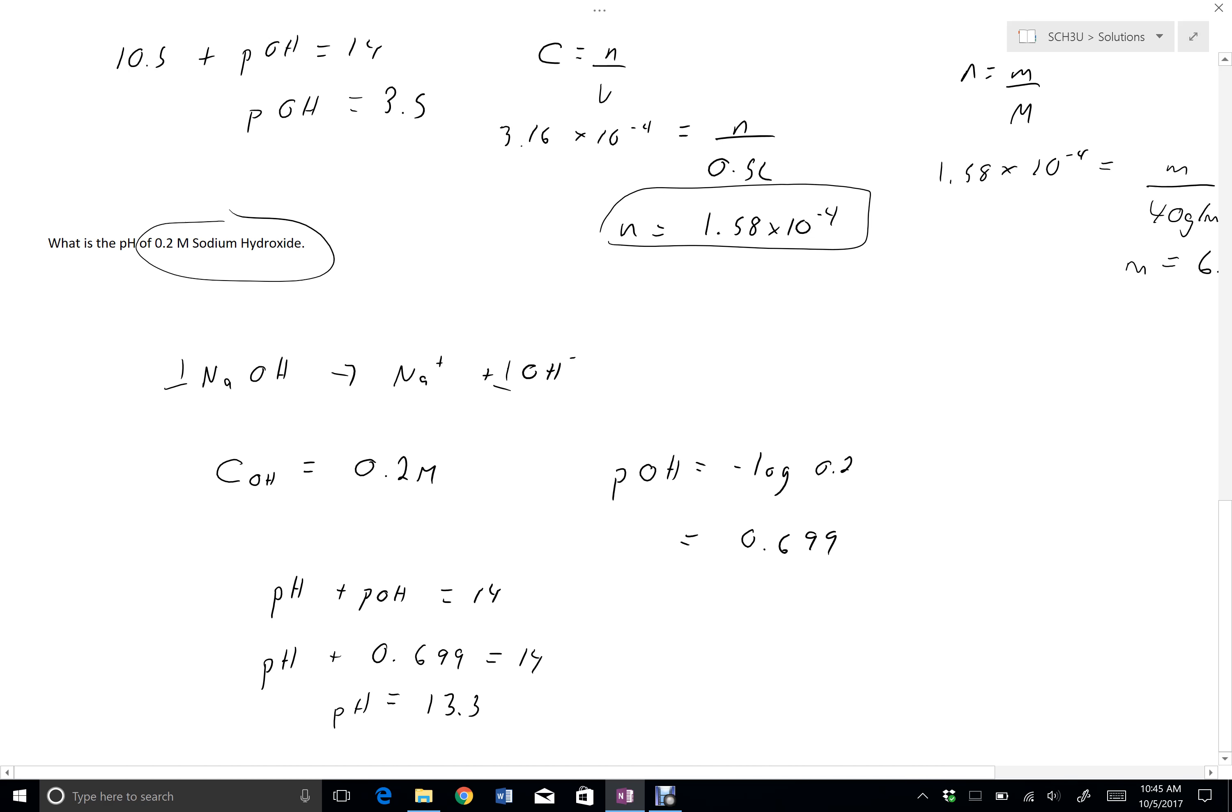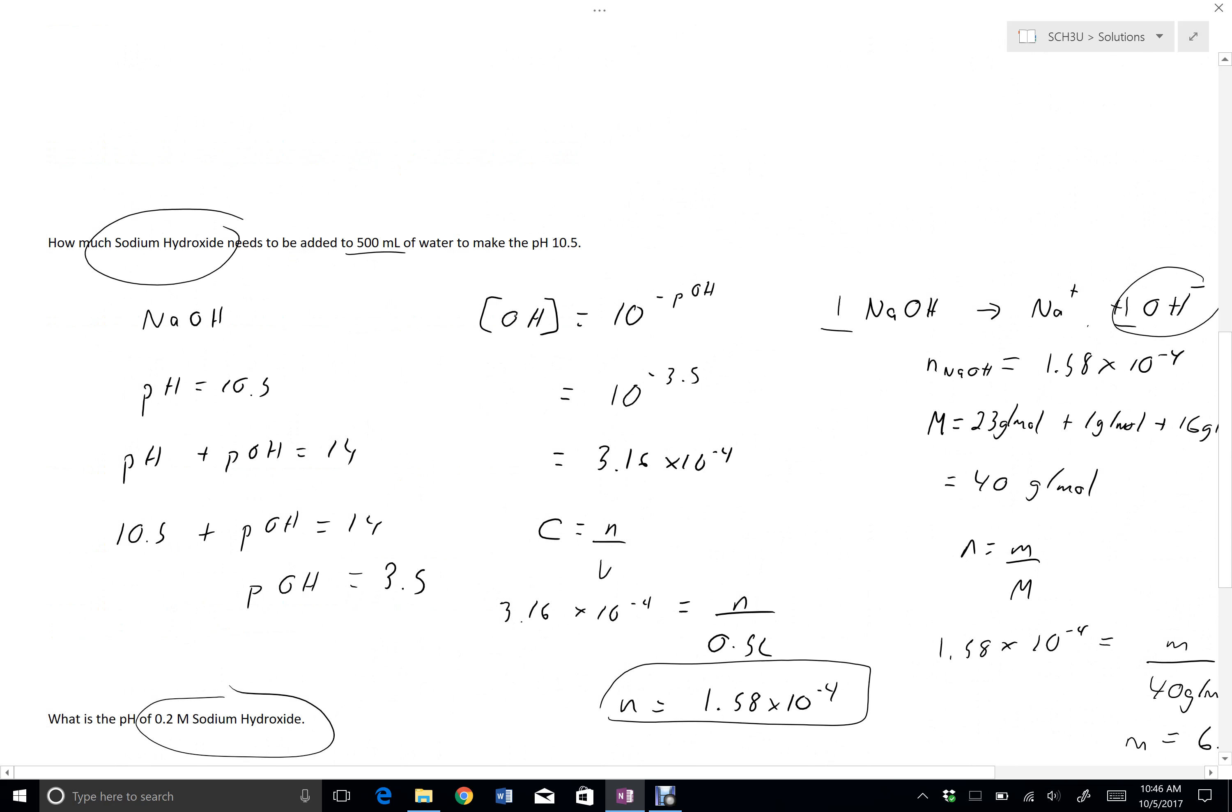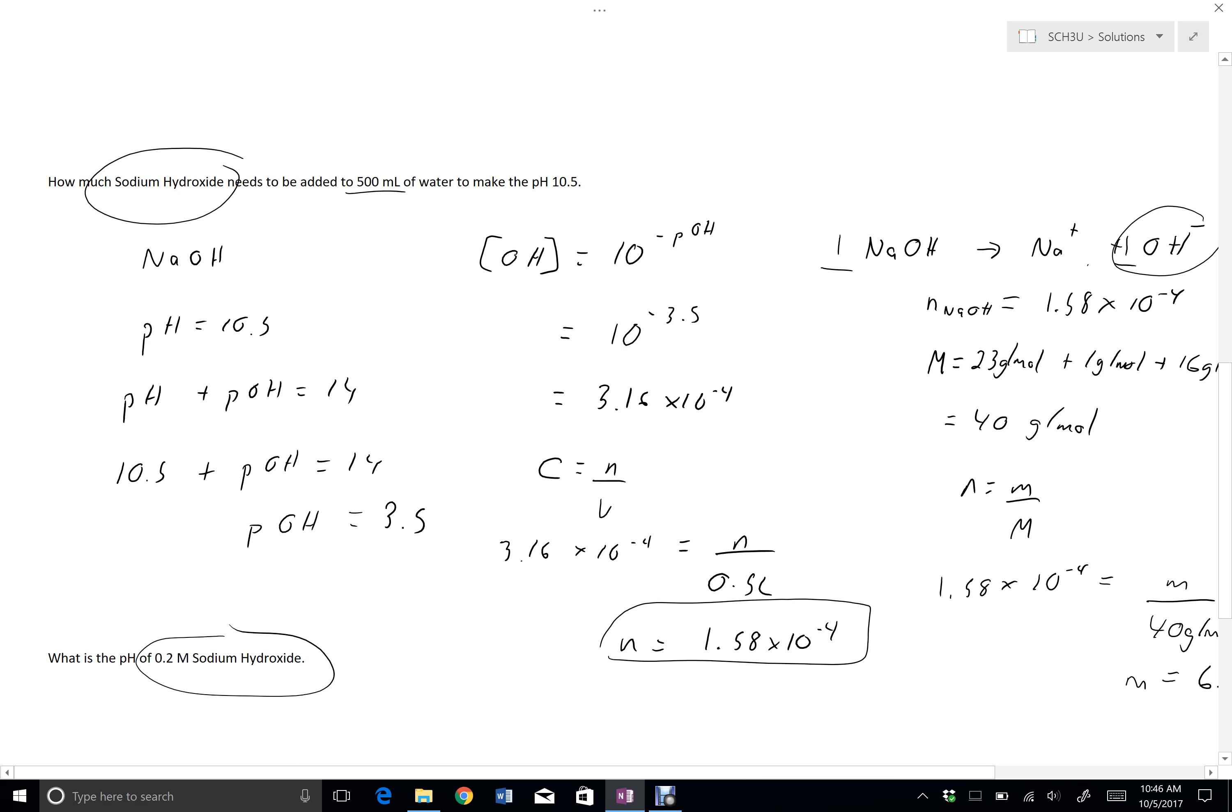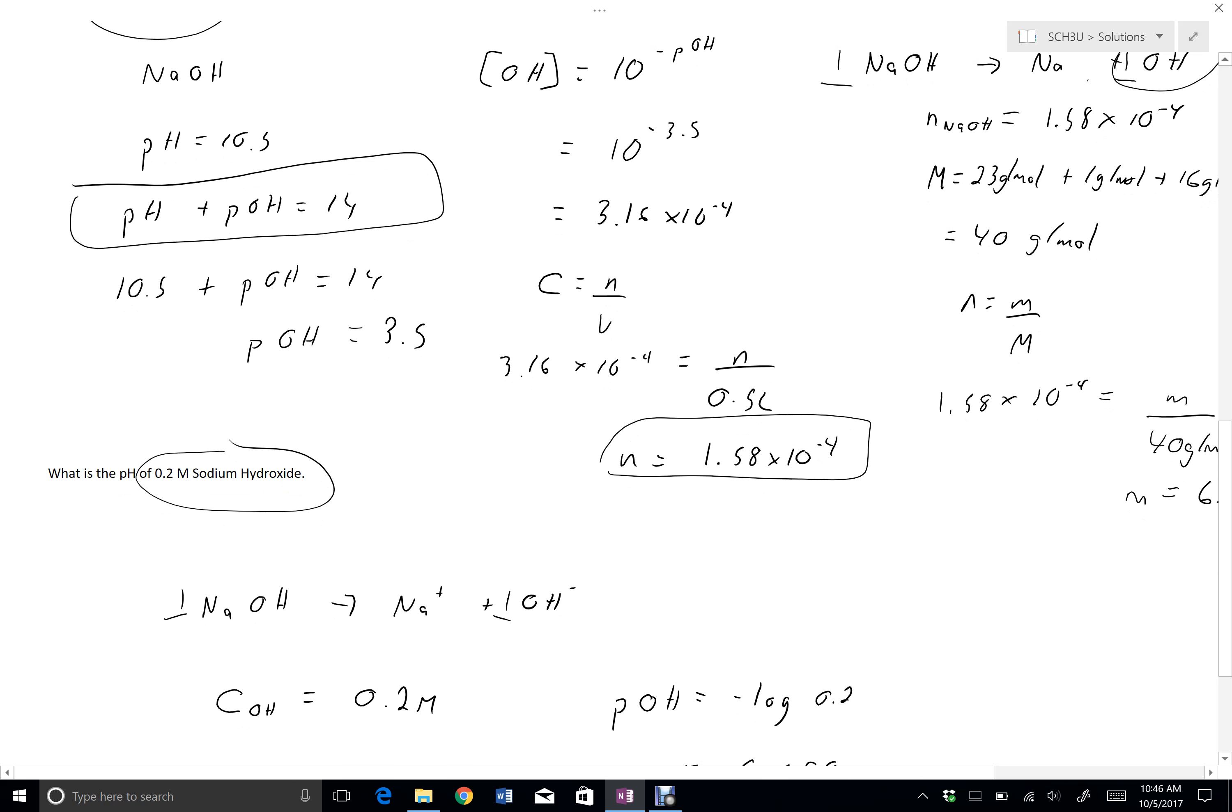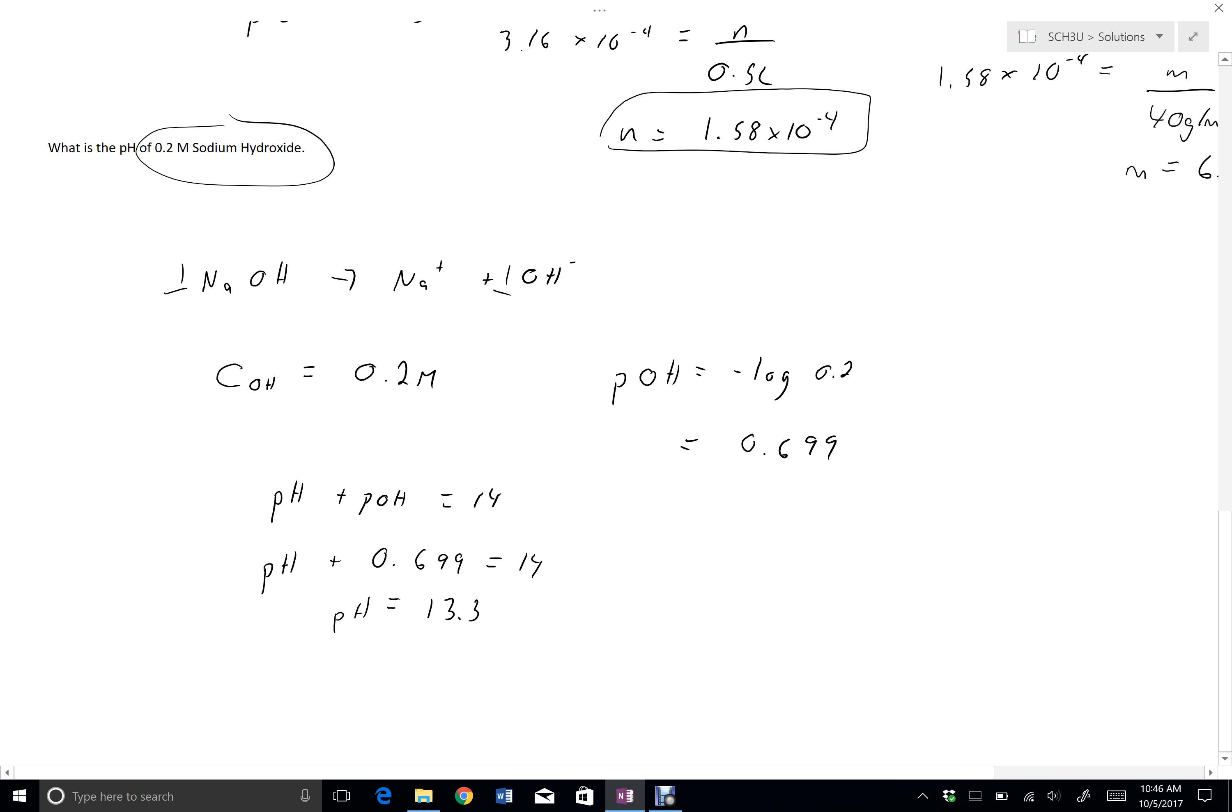So when I'm working with bases, I can find pOH or I can use pOH just the same way as I was using pH. Then if I recognize that my pH plus my pOH has to be 14, I can convert that over to a pH as necessary. Or if I'm given a pH, I can convert it over to a pOH as necessary.